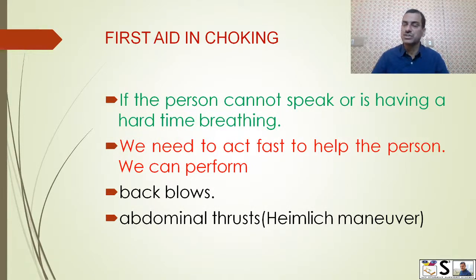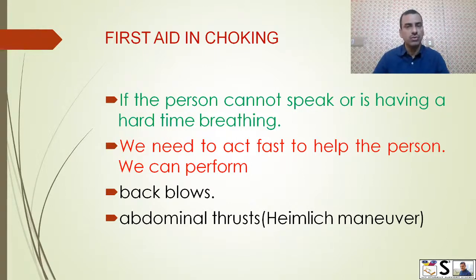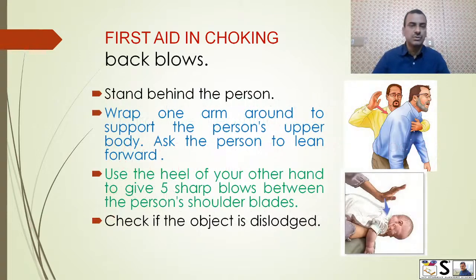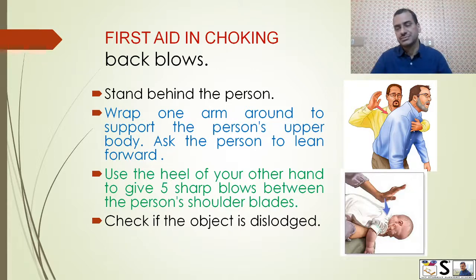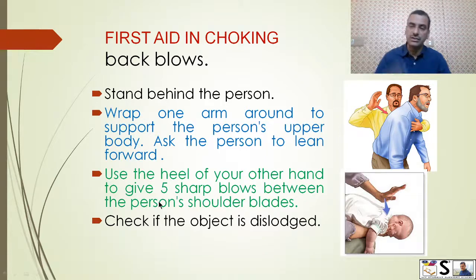If the person cannot speak or is having a hard time breathing, we need to act fast. We can perform two activities: back blows and abdominal thrusts, also known as the Heimlich maneuver. First, we will do back blows. Stand behind the person, wrap one arm around to support the person's upper body, and ask the person to lean forward. Then, use the heel of your other hand to give five sharp blows between the person's shoulder blades.